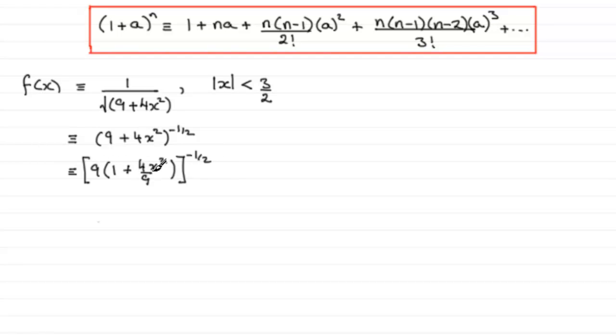Now when you have two things multiplied together to a given power, then it's as if each part here is to that power. So in this case, this can be thought of as 9^(-1/2) multiplied by (1 + 4x²/9), and that also is to the power -1/2.